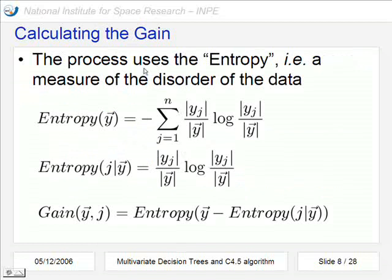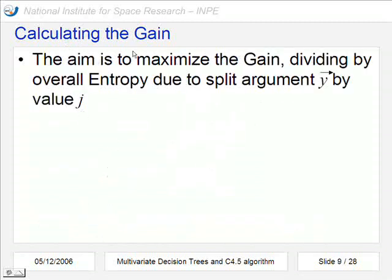The way to calculate the gain uses the entropy, that is a measure of the disorder of the data. Here the entropy of an instance set. Here is the entropy of an instance set considering some class. And here is the gain considering an instance set and a class. The aim of this calculation is to maximize the gain when we divide the overall entropy, splitting this argument by this value.